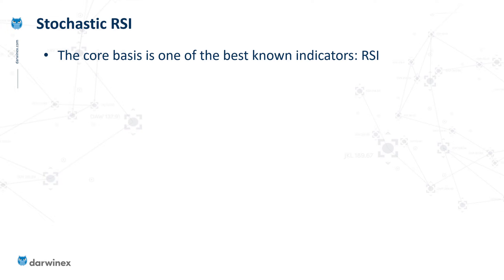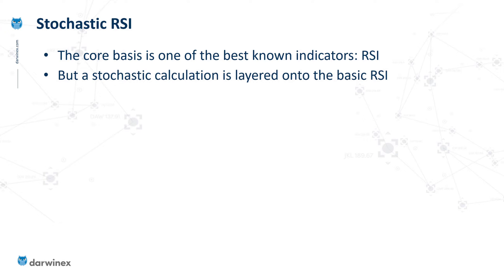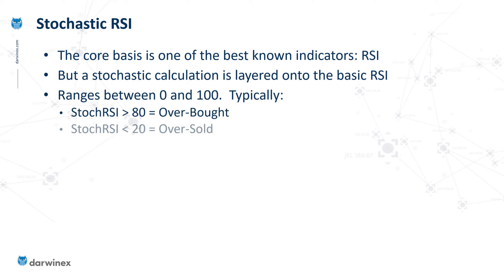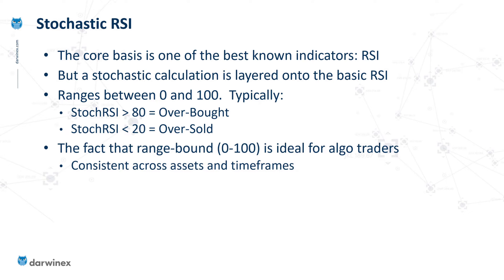The Stochastic RSI is not a completely different indicator — it's based on the values of RSI itself, which is one of the best known and widely used indicators. However, it has a stochastic calculation layered on top of those RSI values. Just like RSI, it still ranges between values of 0 and 100. However, because the Stochastic RSI tends to find it easier to get into extreme levels, it usually has a slightly higher threshold — above 80 for overbought and below 20 for oversold. Because it's range-bound between these two values, regardless of the price of the asset or the timeframe, this makes it ideal for algo traders, as it makes the coding process so much simpler.